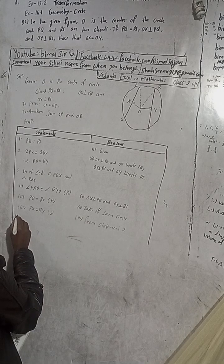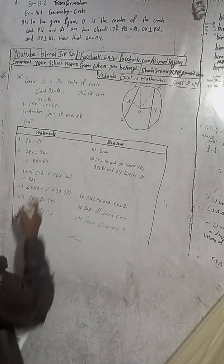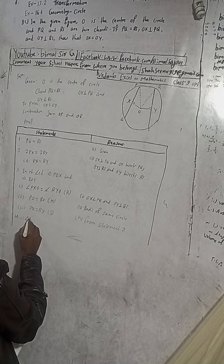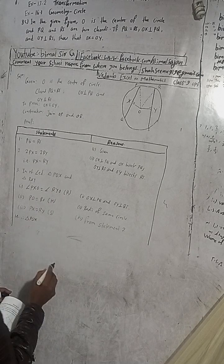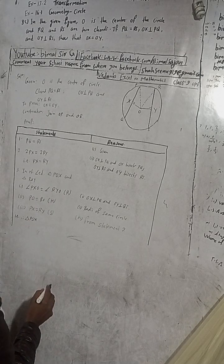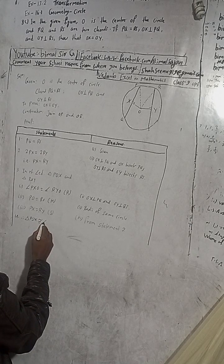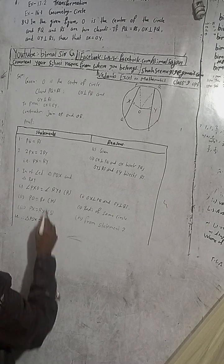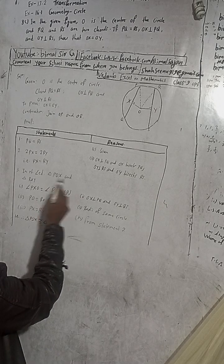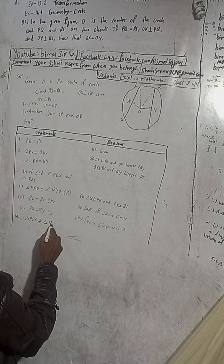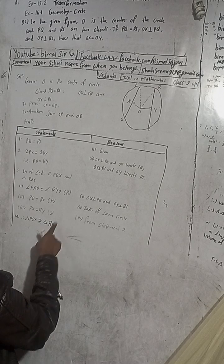Number 4: Therefore triangle POX is congruent to triangle ROY, by RHS congruence.